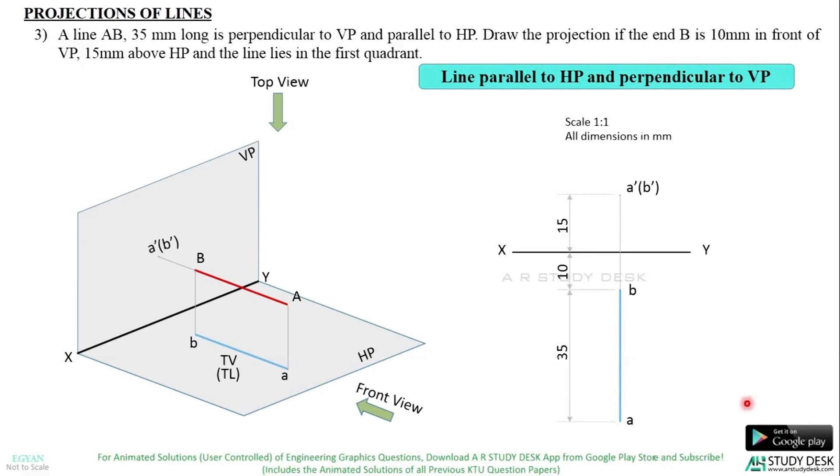Now as we said before, when you are viewing the top view, treat the XY line as VP. So you can conclude that the line BA is perpendicular to VP. Hope it is clear. We shall discuss the next case in the next video. Stay tuned. Thanks for watching. Happy learning.